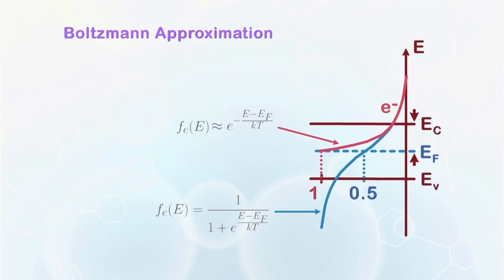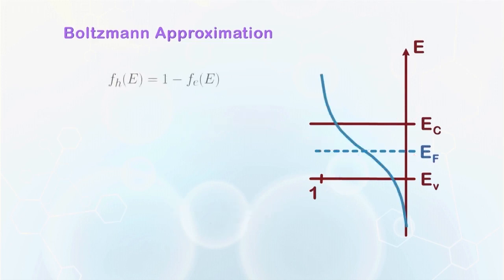In later parts of the course, you will learn that the position of EF can be adjusted by doping, but we will not consider it at this moment. After the Boltzmann approximation, the relationship of the Fermi-Dirac function of holes equal to one minus the Fermi-Dirac function of electrons is no longer valid. A separate expression of the Boltzmann approximation for holes as shown here is required.